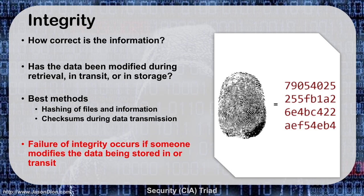The way we ensure integrity is with hashing of files, and we can also use checksums during data transmission. A hash is basically a unique fingerprint — we'll talk much more about hashes later, including MD5, SHA-1, SHA-256, and other hashing methods. If I take a unique hash of a file, I've created a unique fingerprint, and I can compare that fingerprint from the time it left my machine to the time it got to your machine. If they match, that file has full integrity through transit. A failure of integrity occurs if someone modifies the data while stored, retrieved, or in transit — through techniques like data diddling or salami attacks.